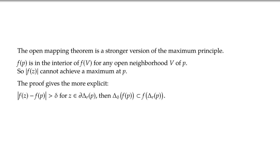The proof actually gives us something more explicit. It basically says: if you find that |F(z)| is at least δ away on a little circle, then the entire δ-neighborhood of F(P) will be in the image. So the proof gives us more than just the open mapping theorem — we can use it to get an actual bound on the size of this disk. If we know something more about F and can get some bounds, we can get a size estimate on this disk.